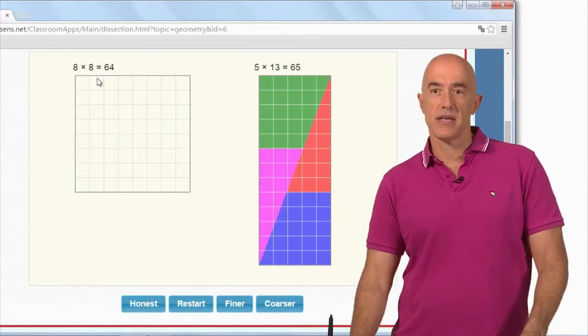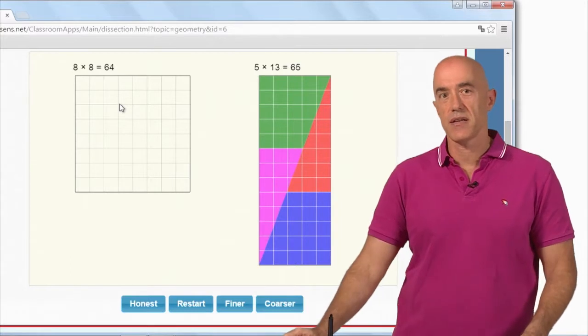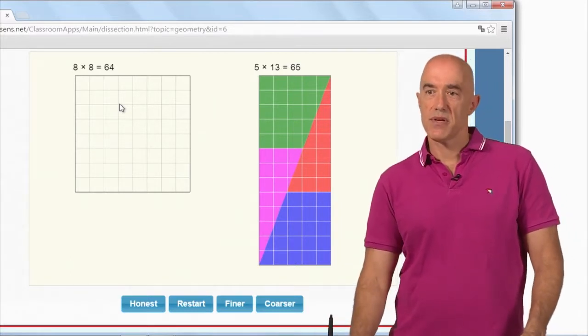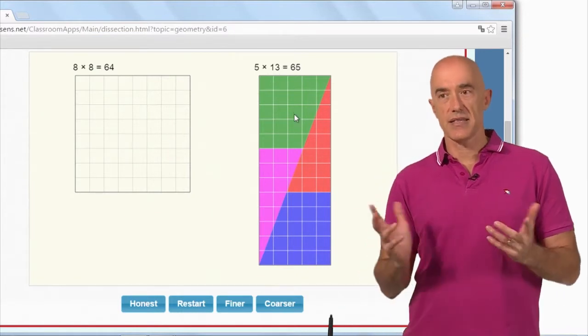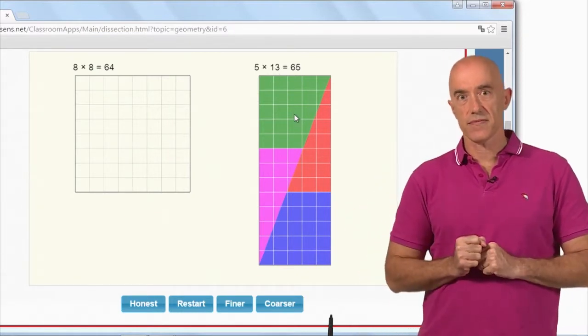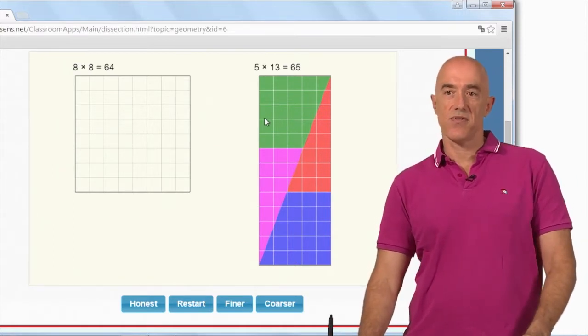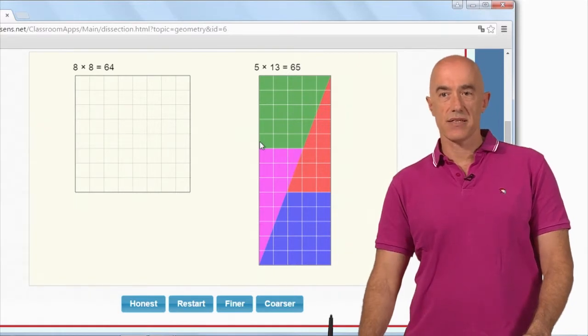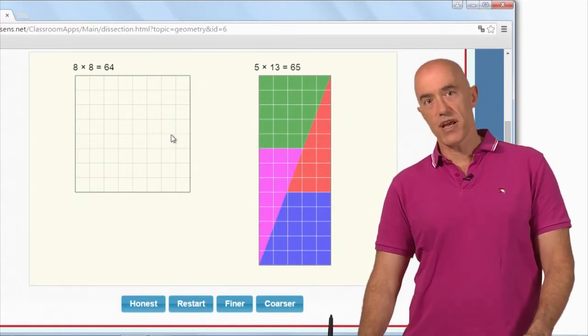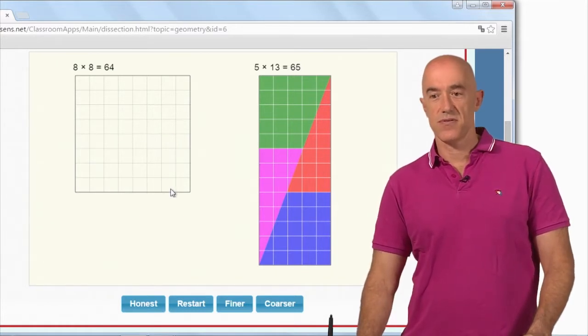But look, this square is eight by eight, so this square has area 64. But this rectangle is five by 13, and this rectangle then has area 65. So somehow we've created one unit of area moving from the square into the rectangle. You think that's possible?